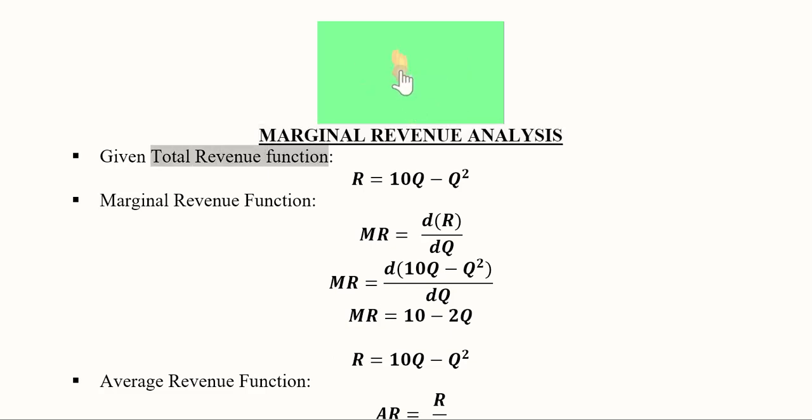So we are given a total revenue function which is equal to this, and we have this total revenue function as a function of output.